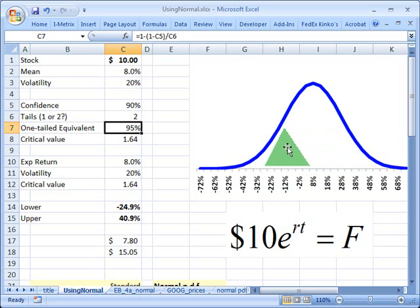I'll go back to 8. If I go one standard deviation to the right, 8 plus 20% is 28%. That's one standard deviation. What I want is I'm assuming my returns are normally distributed and I want an interval with 90% confidence.